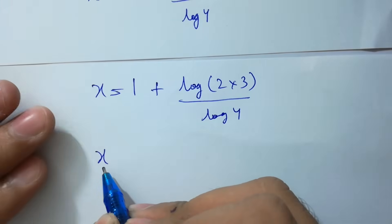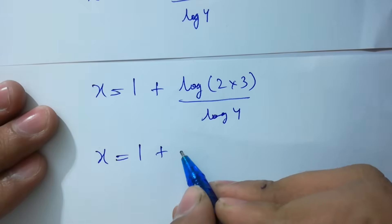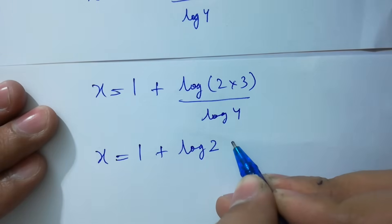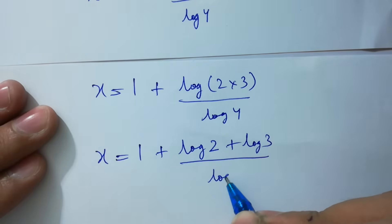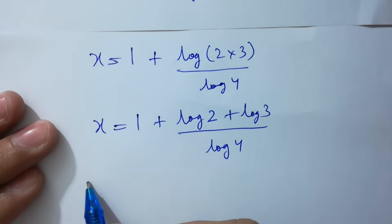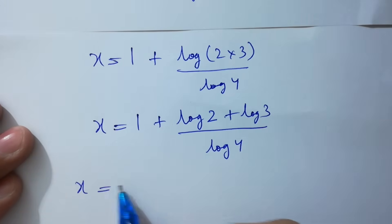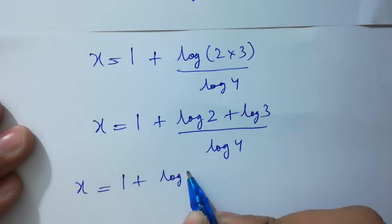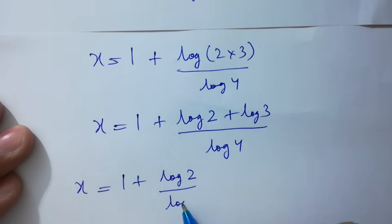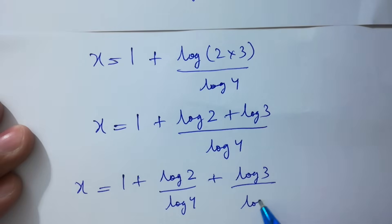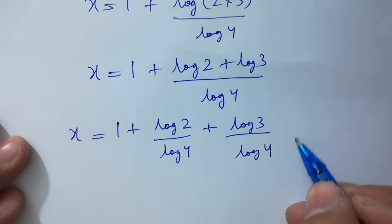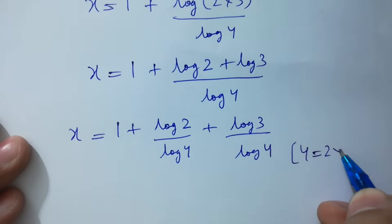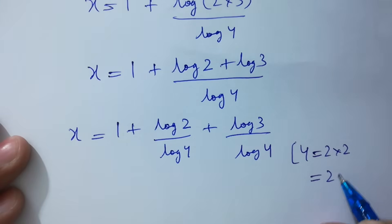x equals 1 plus log 2 plus log 3 over log 4, which gives x equal to 1 plus log 2 over log 4 plus log 3 over log 4. Now, since 4 equals 2 times 2, which is the same as 2 squared,